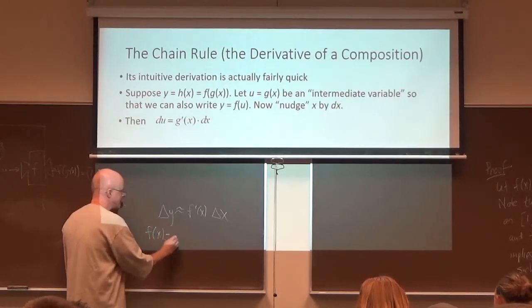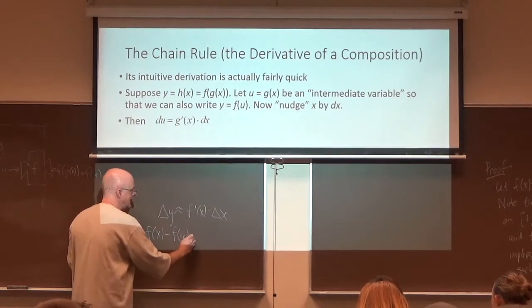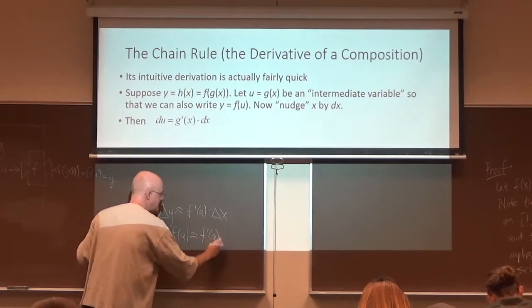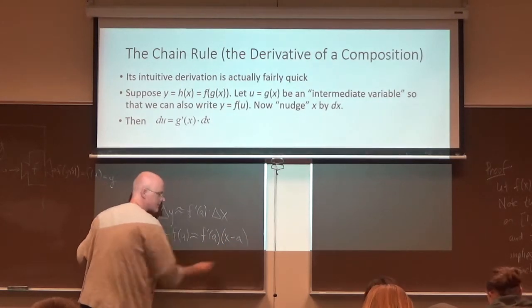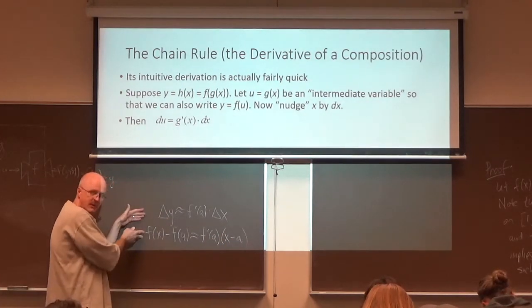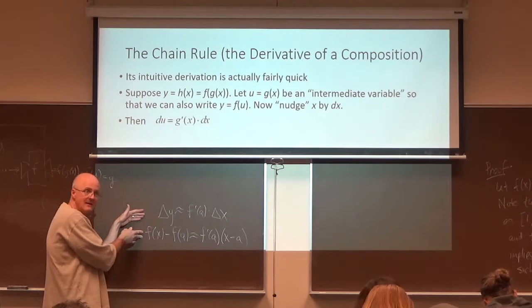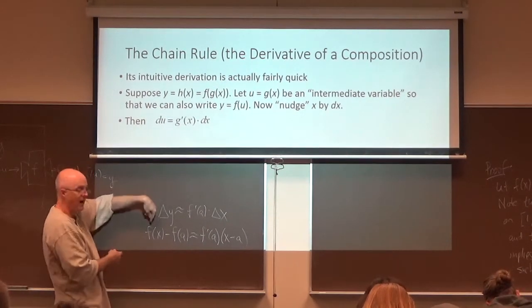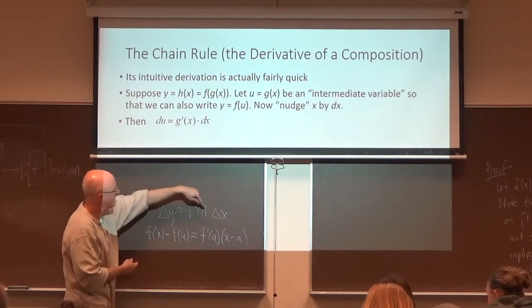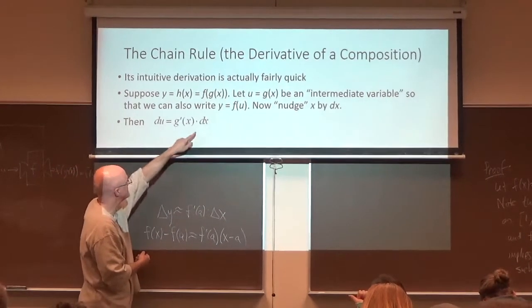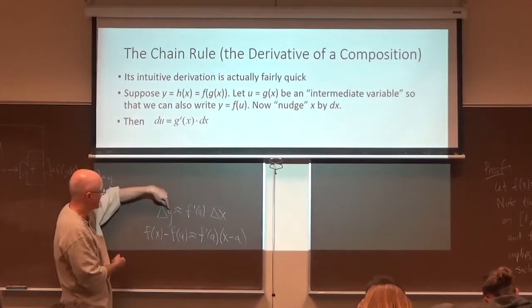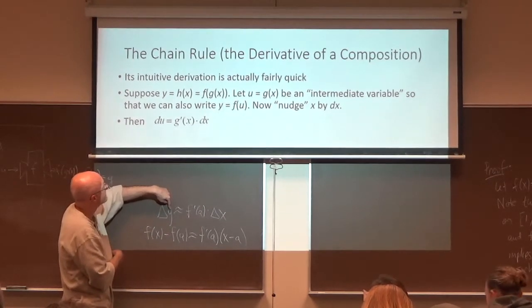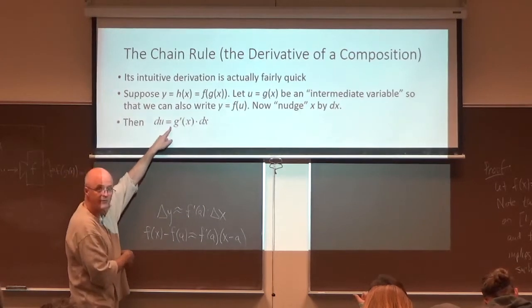Alternatively, you can write it as f of x minus f of a is approximately, I should really write an a here. f prime of a times x minus a. Those are true approximate equations we've seen already. This is a quote-unquote exact version of these approximate equations. Instead of using delta x and delta y, we use du and dx. I guess I would use du here as well, but I'm changing the letter here. Pretend that's an equal sign.